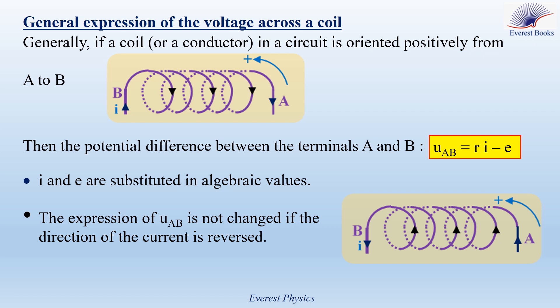Pay attention: the expression of U_AB is not changed if the direction of the current is reversed — this expression does not depend on the direction of the current. In the first figure the current flows from B to A, in the second from A to B; since the positive sense in both figures is oriented from A to B, U_AB remains RI − E in both cases. Finally, if the circuit is open and the current is zero, then U_AB = −E.